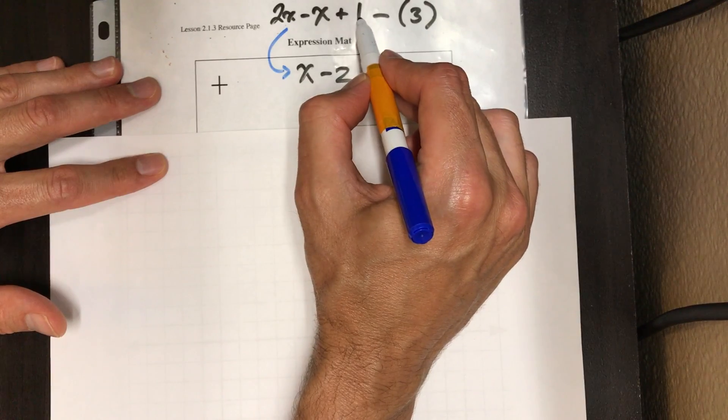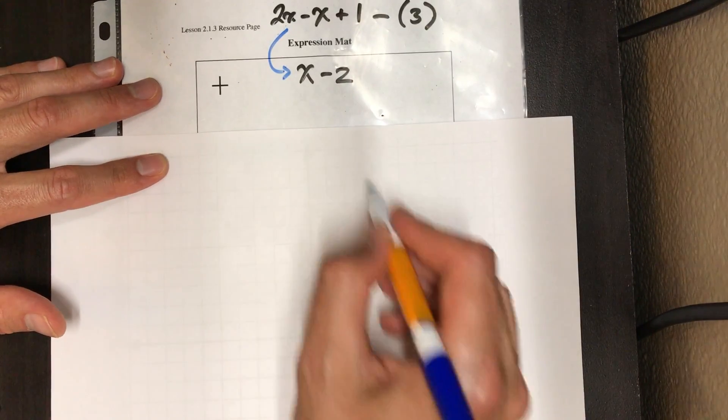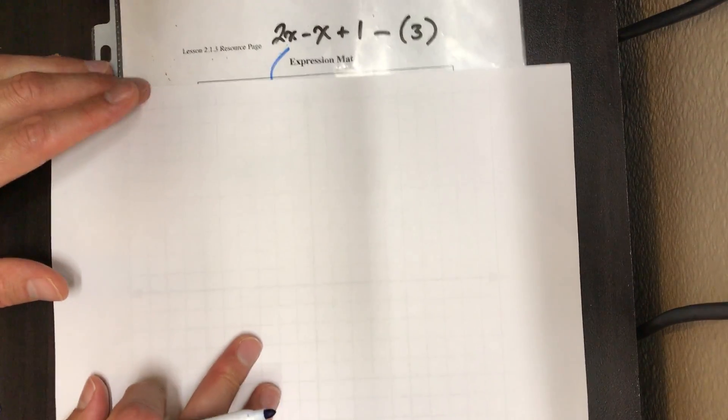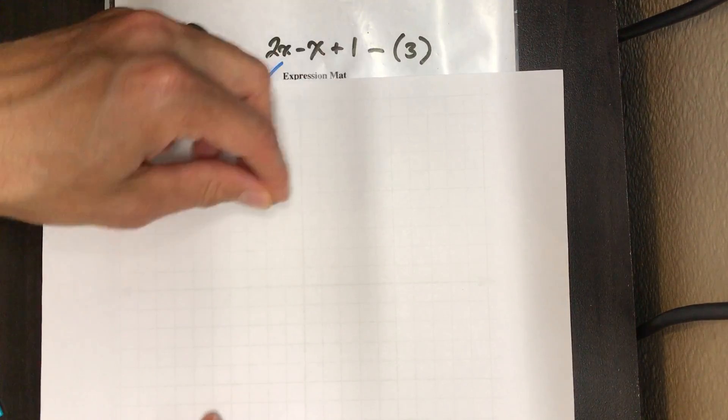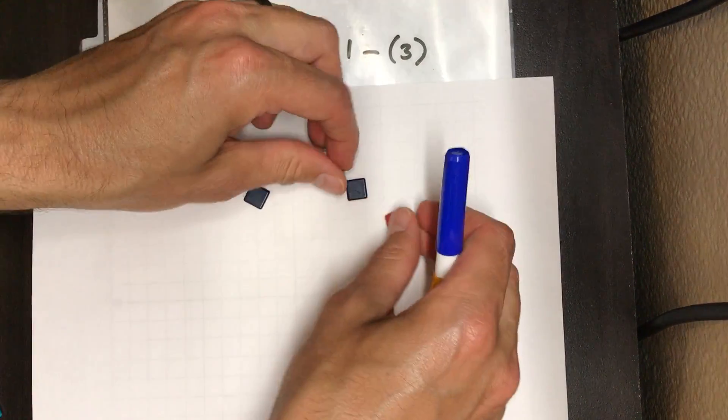Now over here we've got positive one and we're taking away three. So we know we saw what happened with the algebra tiles. Now if I don't have the expression mat, we can just go back to old school where we're working with one positive and three negatives. I'll put those up there for you all to see.